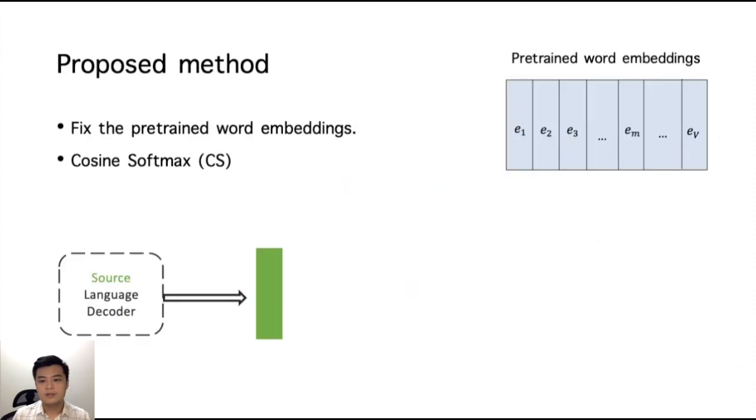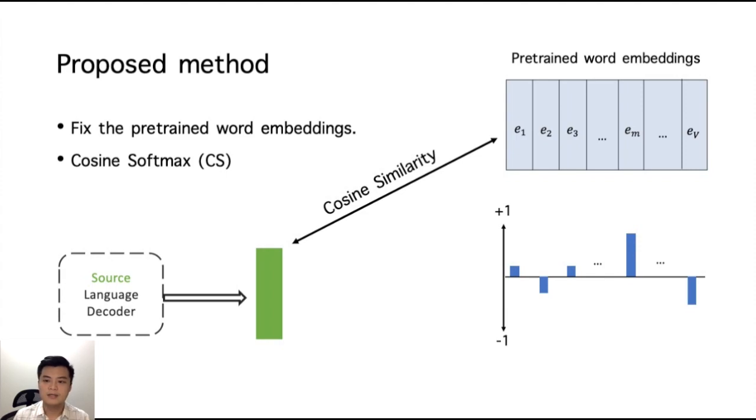And here is the proposed method. We fix a set of pre-trained word embeddings, and these word embeddings will not be updated during training. We firstly compute the cosine similarity between the hidden state and the pre-trained word embeddings, and we obtain a similarity distribution which is bounded between negative 1 to positive 1.